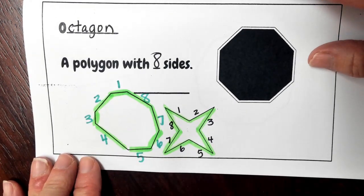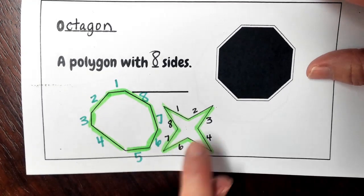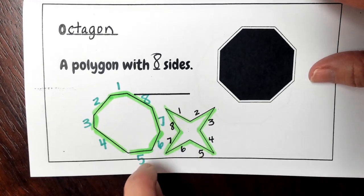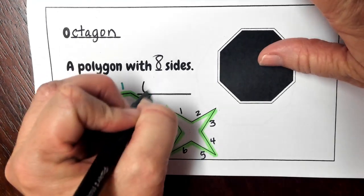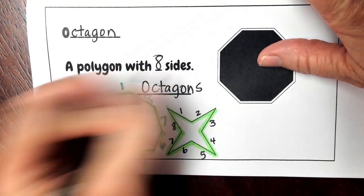So again, whenever we're labeling or identifying those polygons, we want to identify how many line segments we see that make that picture. So this is an octagon, or octagons because there are two.